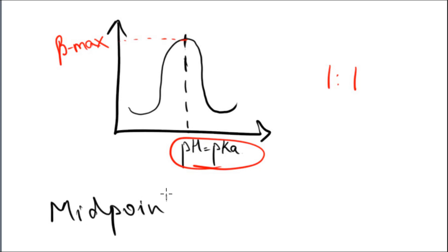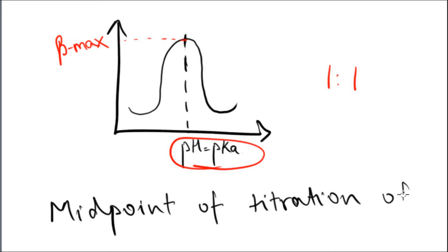Buffer capacity is maximum at the midpoint of the titration of a weak acid and its conjugate, or vice versa.